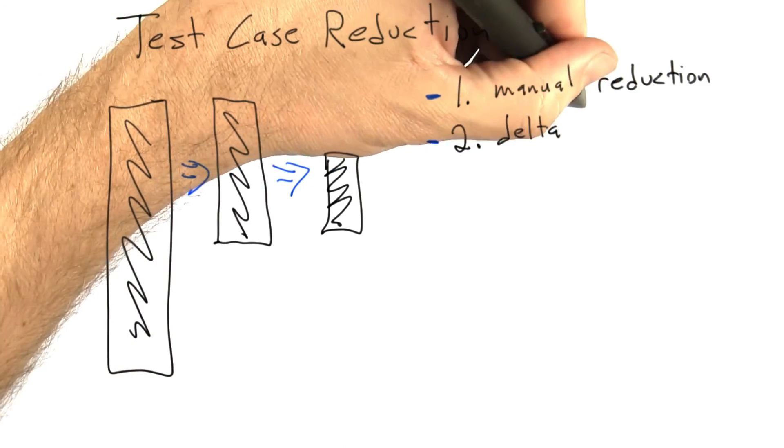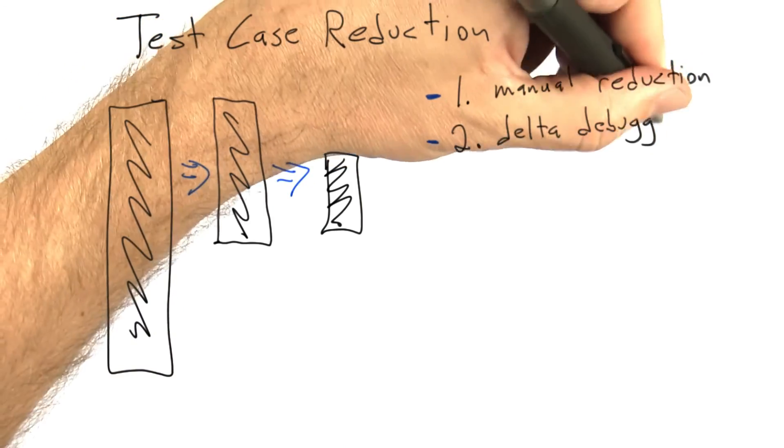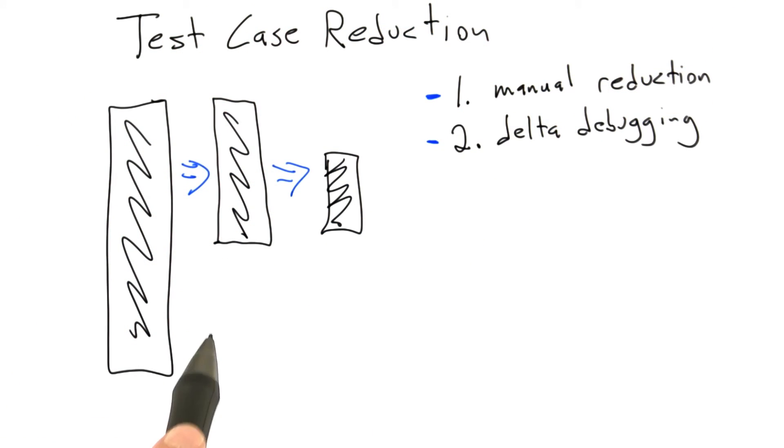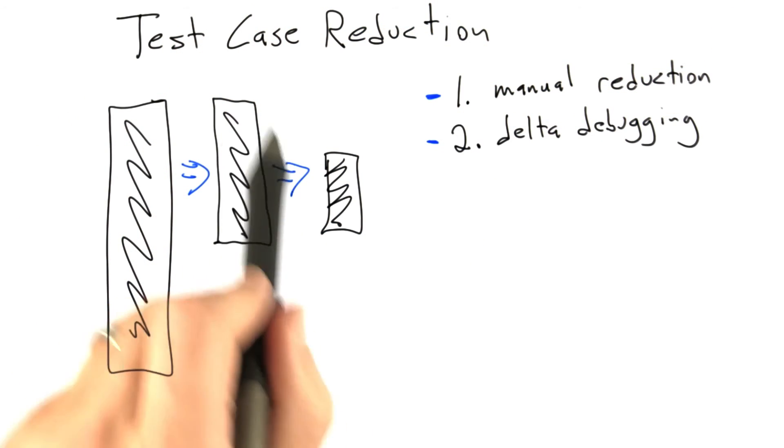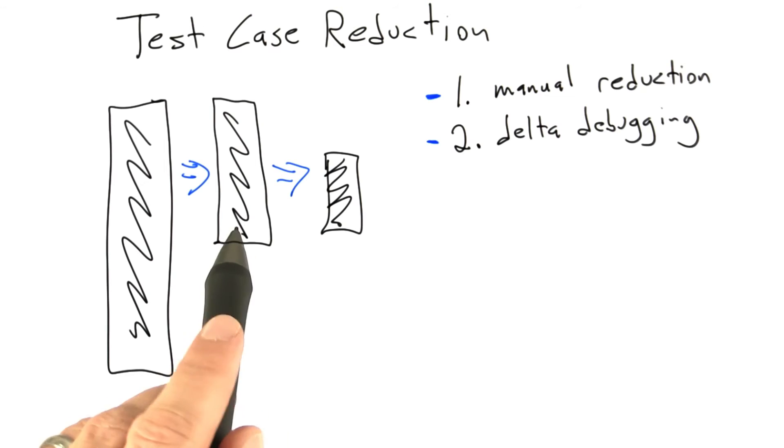The second option is really cool. It's a really nice technique. And it's called delta debugging, and it automates this process. So if you can write a program that can tell automatically if a particular input triggers a failure,